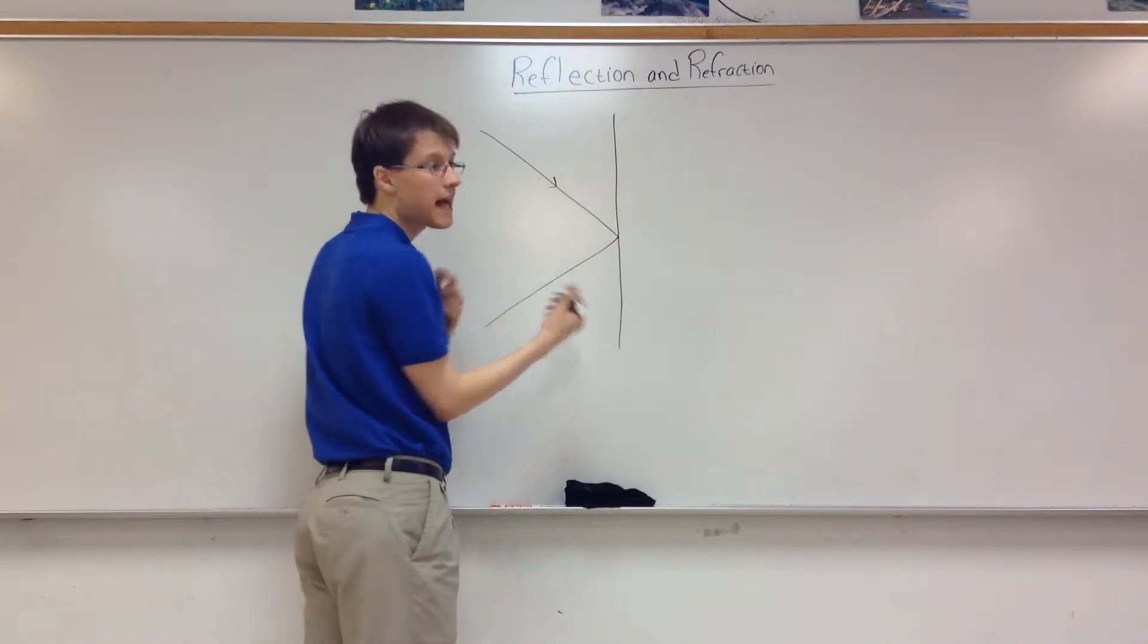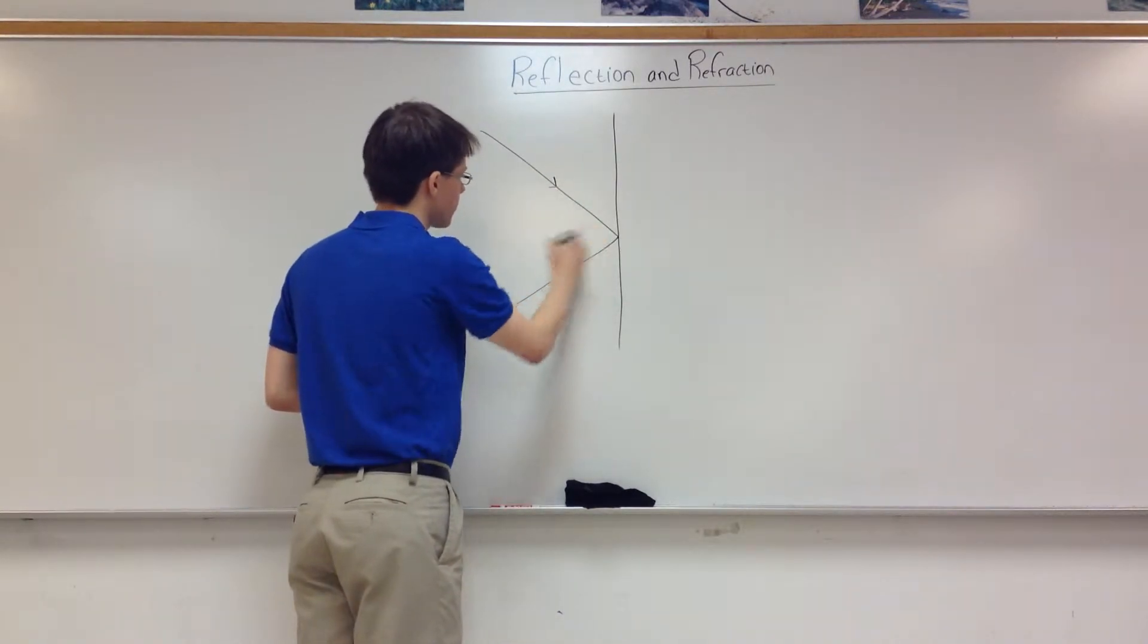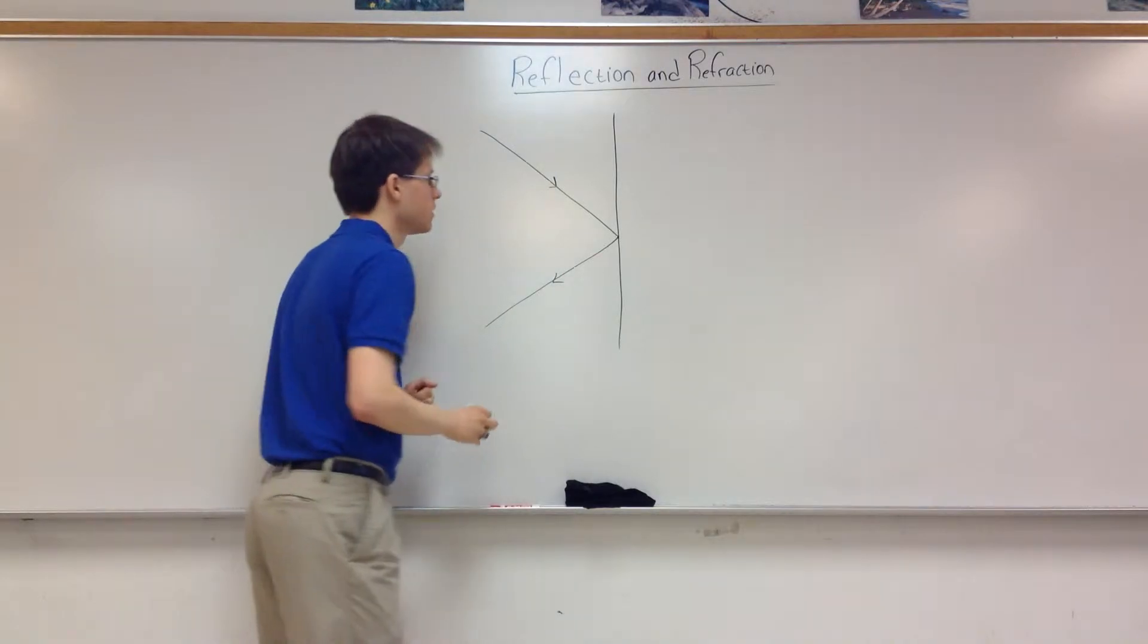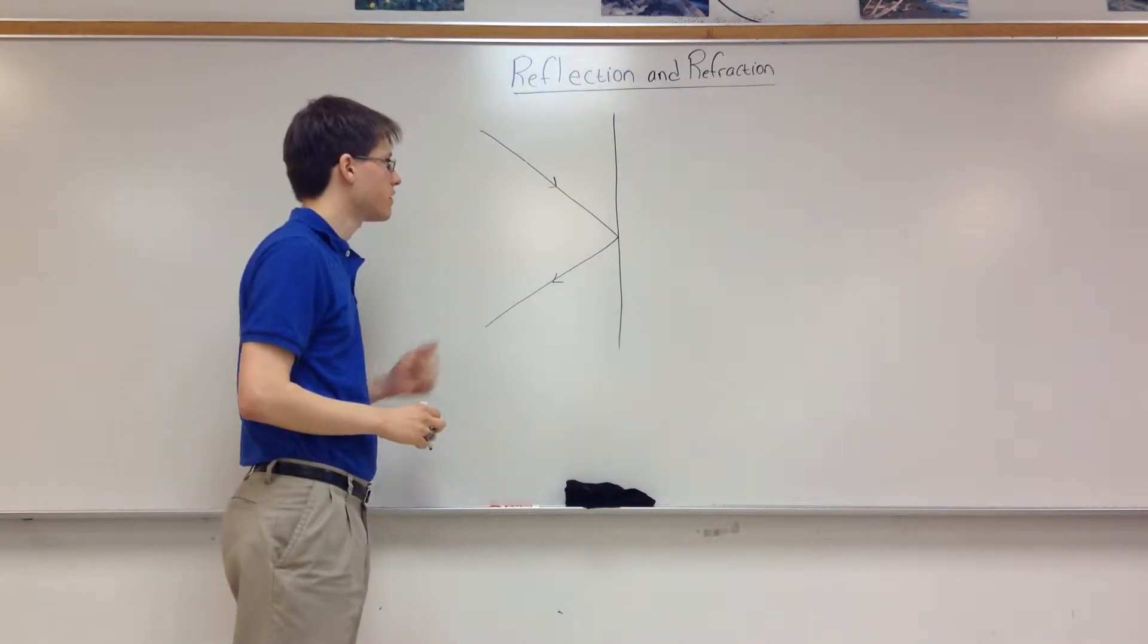The reason you're able to see objects is because everything reflects light. Black, I suppose, absorbs it all, but we have that going in and this coming out. And this is reflection.